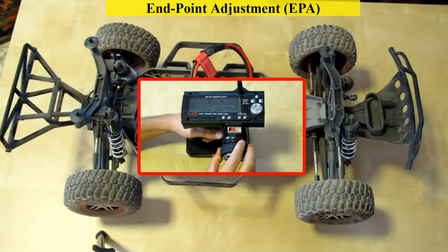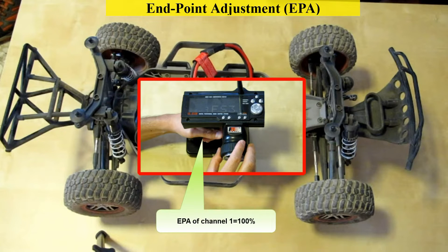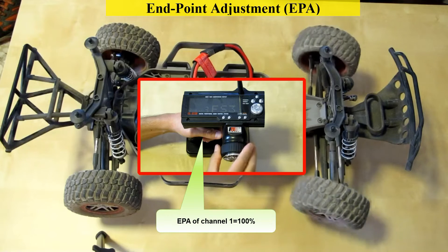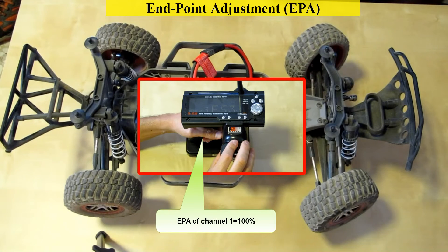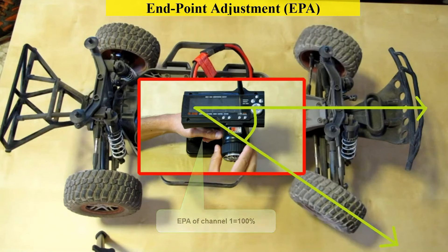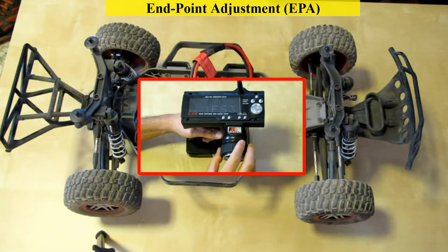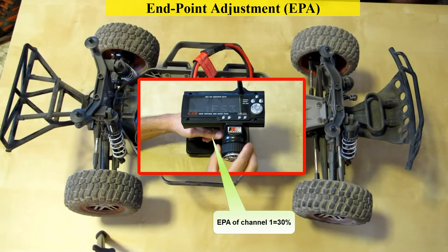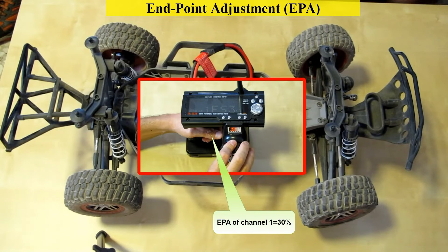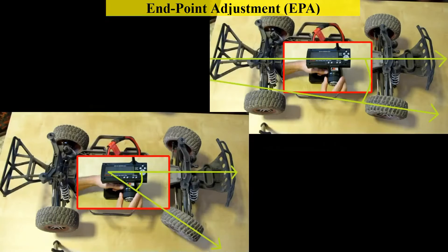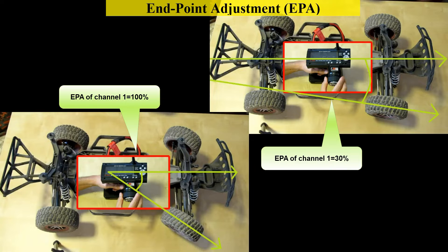Let's do an example of EPA on Channel 1. The remote control EPA is set to 100% in Channel 1, which is the steering wheel. In each direction, let's turn the wheels all the way right, all the way left — remember these angles. Now I set the EPA to 30%. Let's turn the wheels all the way right, all the way left. Behold, the maximum angles of the wheels are only a small amount of what they were.